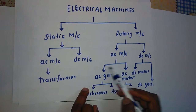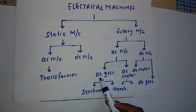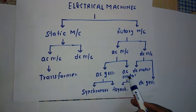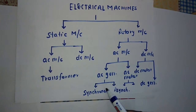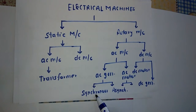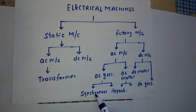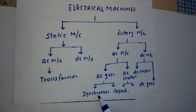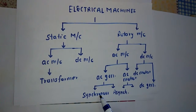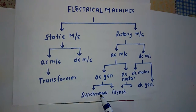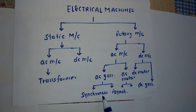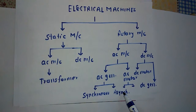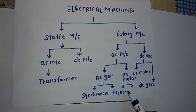AC machines have two classifications: one is AC generator and another is AC motor. AC generators again have two classifications: synchronous generator and asynchronous generator. Synchronous generators are those which rotate at a constant or fixed speed, while asynchronous generators do not have a fixed speed or prime mover.